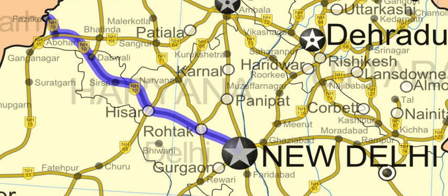The Bollywood thriller movie NH-10, produced by Anushka Sharma, is based on a story of travel on National Highway 10. However, the condition of the highway is much better than what was shown in the movie, and it does not pass through Gurgaon.